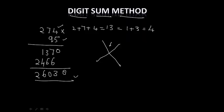So put that 4 on top of the multiplication mark. Next you sum up the multiplier. So 9 plus 5 is 14. That is equal to 1 plus 4. That is equal to 5. Put that number down.